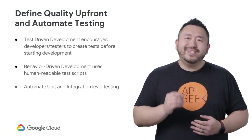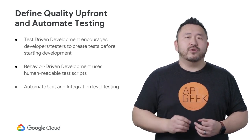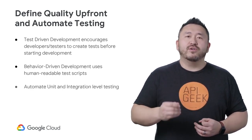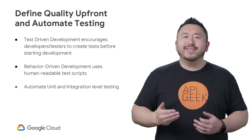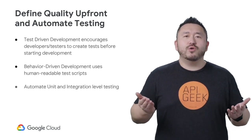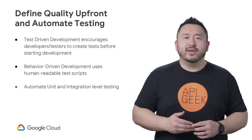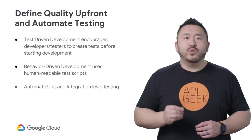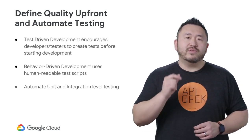By writing test cases that are programmable scripts, we can run the tests over and over again, taking a huge load off the traditional QA bottleneck. It makes turnarounds on the QA feedback loop incredibly fast.